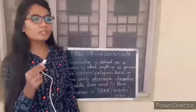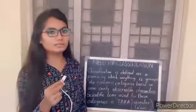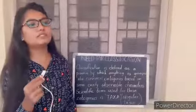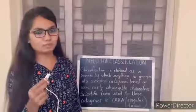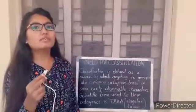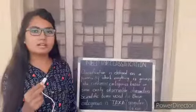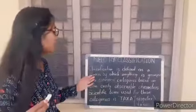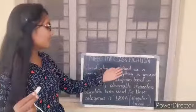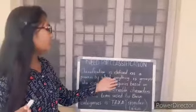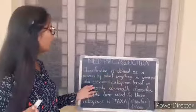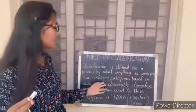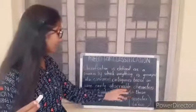It is impossible to study all the organisms in a group, so it is necessary to devise some means to make this possible. This process is called classification. Classification is defined as a process by which anything is grouped into convenient categories based on easily observable characters.